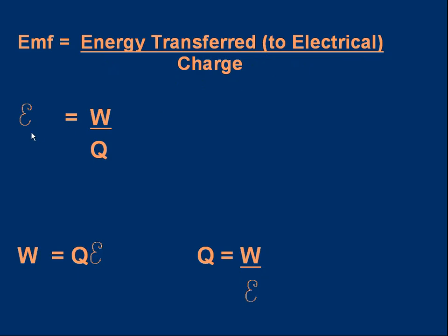The symbol for EMF is a curly E and if we want to put the first equation into symbolic form we write the curly E equals, well energy transferred we don't want to use E because it gets mixed up with EMF so we use W which stands for work and work is energy that's been transferred from one form to another. So we're going to divide the work, the energy transferred, by the amount of charge that's flowed and that is given a symbol Q and we end up with the important formula for EMF which is equal to W over Q, the energy transfer over the charge.